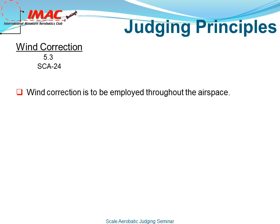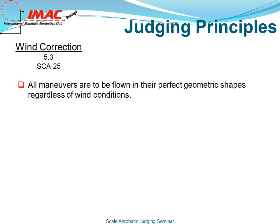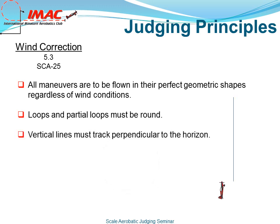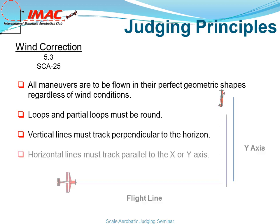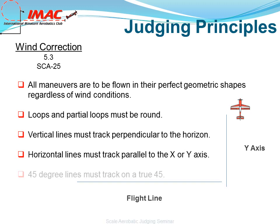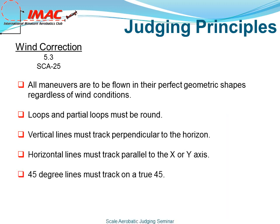Wind correcting is to be employed throughout the airspace. All maneuvers are to be flown in their perfect geometric shapes regardless of wind conditions. Loops and part loops must be round — one would pitch into or out of the wind to maintain a perfect geometric shape. Vertical lines must track perpendicular to the horizon, and horizontal lines must track parallel to the x or y axis.